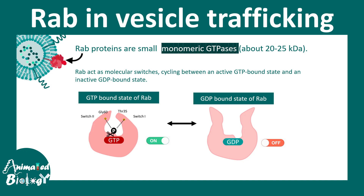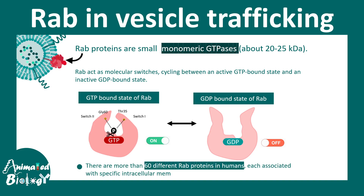There are about 60 different types of RAB proteins present in humans, and each of these RAB proteins is specific to one type of intracellular membrane.